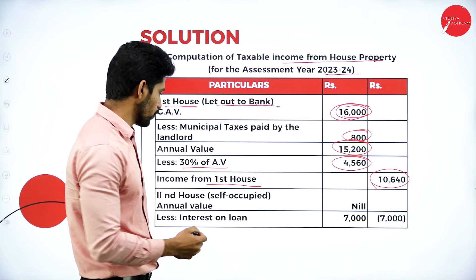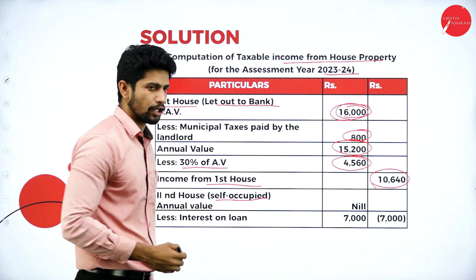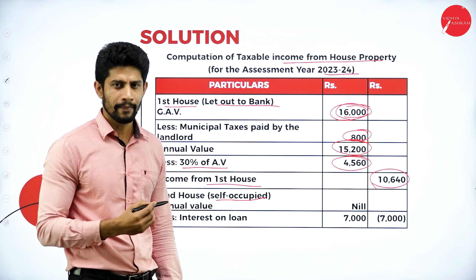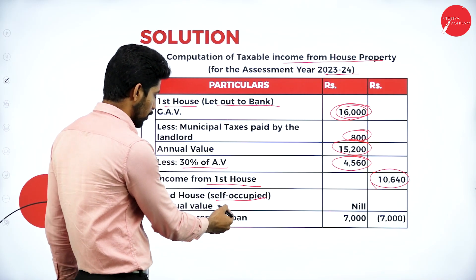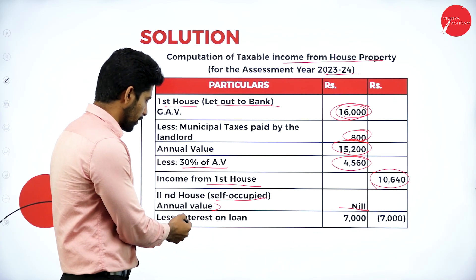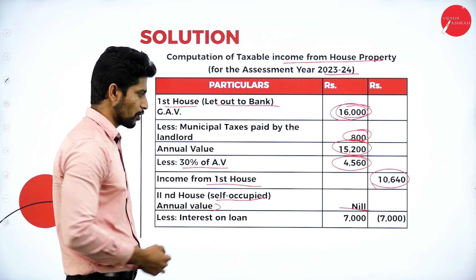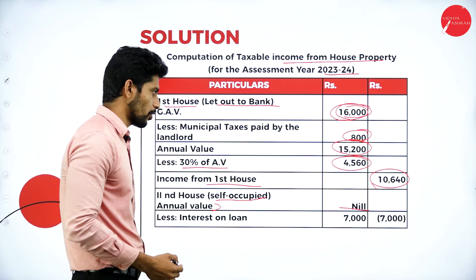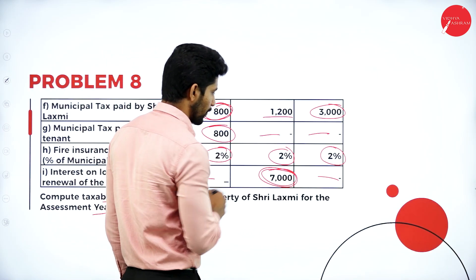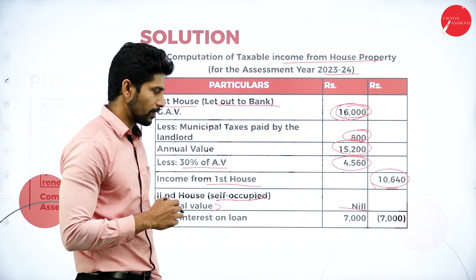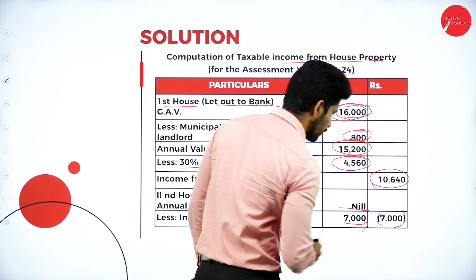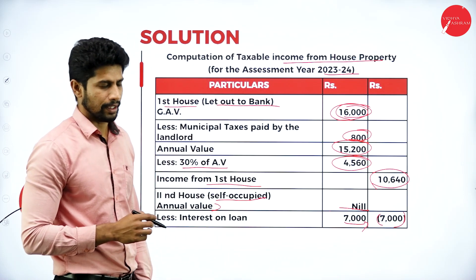House two is self-occupied — occupied by Lakshmi herself. She receives no rent. Annual value is nil. We only deduct the interest on loan. The interest on loan for the self-occupied property is 7,000. So show 7,000 as a loss from self-occupied property.